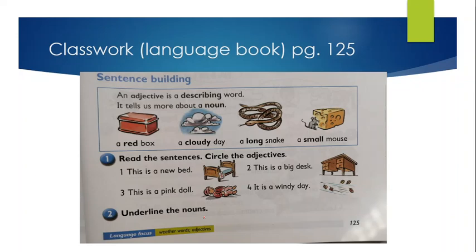Open page 125 for language book. A box. We can simply say a box. If we say a red box, red is an Adjective. A day. If we say a day, there is no Adjective. If we say a cloudy day, cloudy is an Adjective.